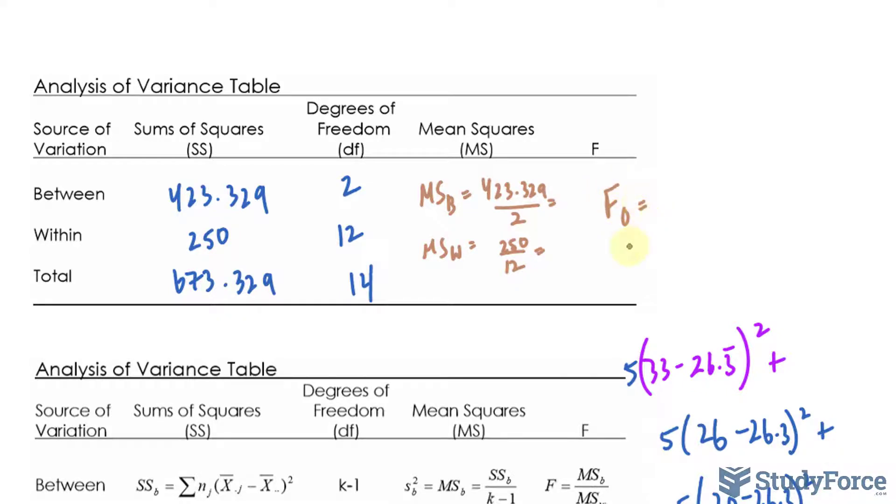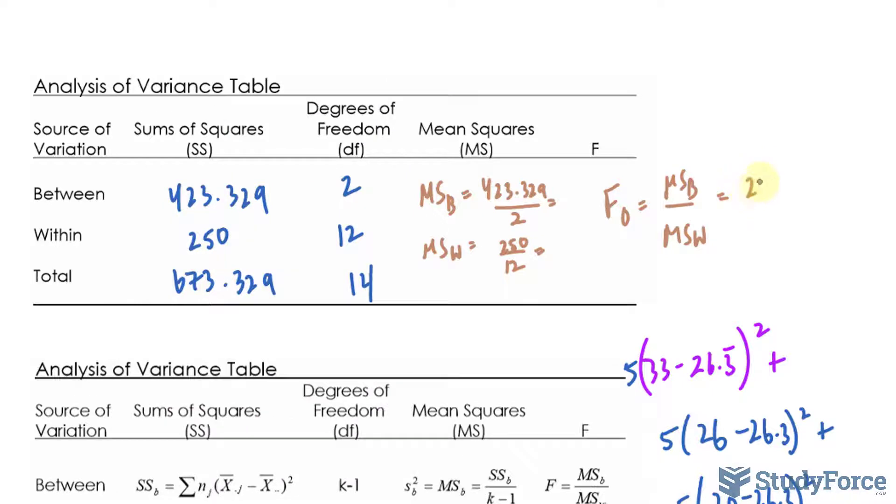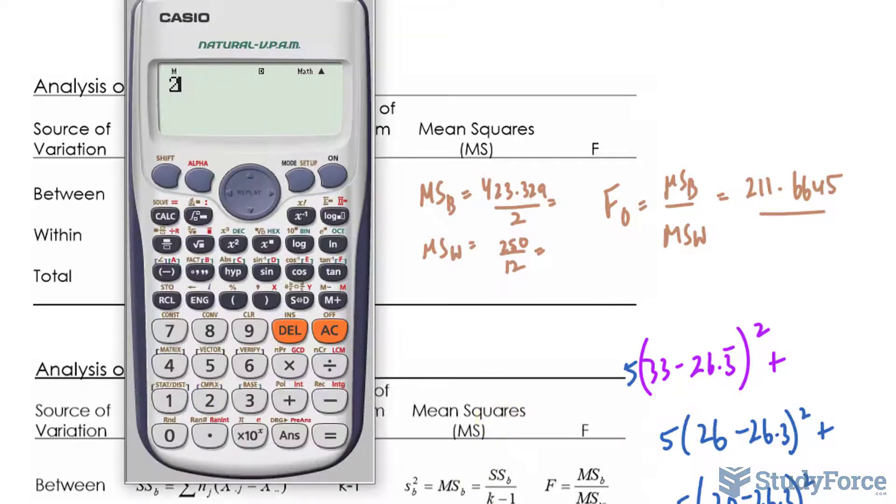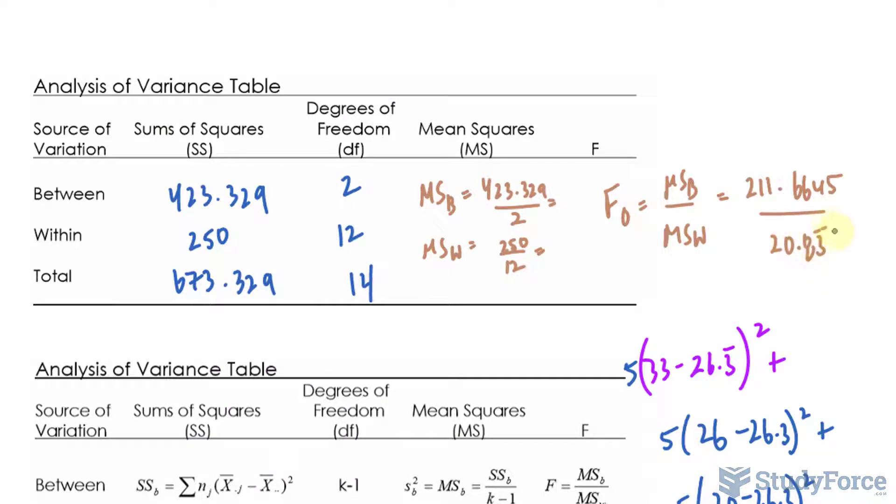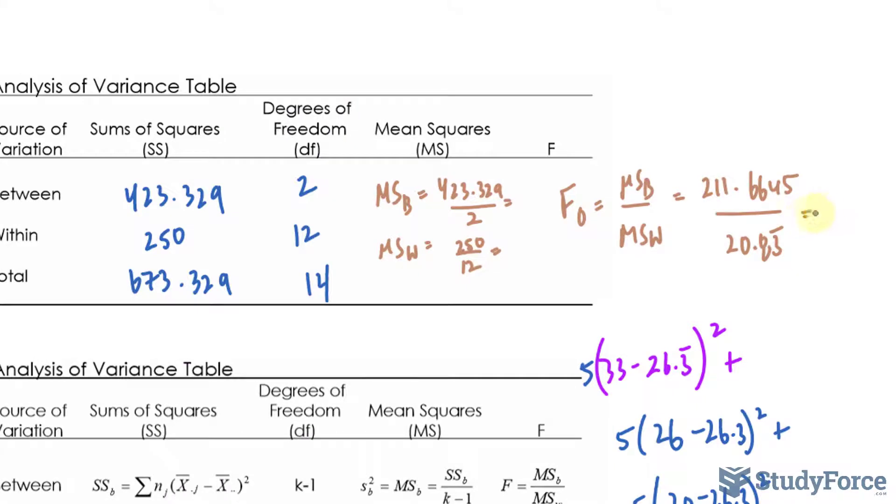So F observed equals MSB over MSW. Let's go ahead and figure those numbers out. 423.329 divided by 2: 211.6645 over 250 divided by 12. And that's 20.83 repeating. Now we can take 211.6645 divided by the answer. And that is 10.15 or approximately that. We filled in our analysis of variance table.